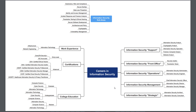So careers in information security — I have created this map here to really lay out the different types of tracks or paths that you can travel within information security. I will show you how to get into information security, what you need to look at from an education or work experience perspective, and then we go into the level of detail to see what type of professions are available in information security so that you can plan out your career.